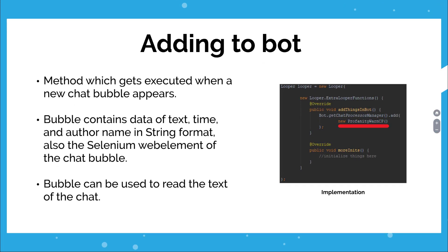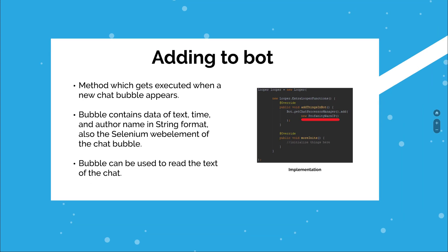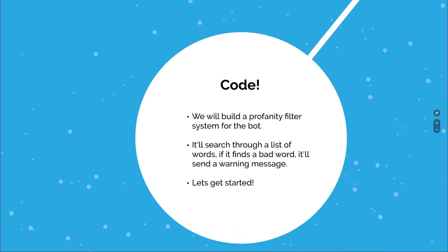To add the chat processor to the bot, you just need to add its object in the bot by using the bot.getChatProcessorManager.add method in the main class. Now let's code.